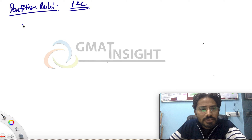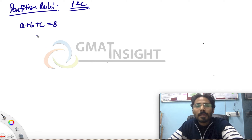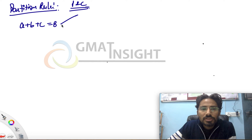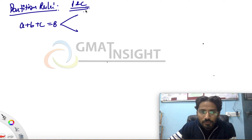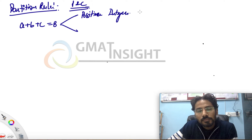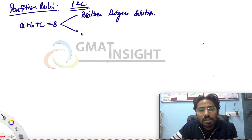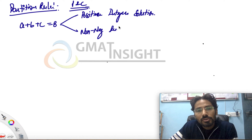The question comes in a way where, for example, we have a linear equation in three variables: a + b + c = 8. There are two types of questions we may come across. The first type asks how many positive integer solutions exist for this equation, and the second type asks how many non-negative integer solutions exist for this equation.